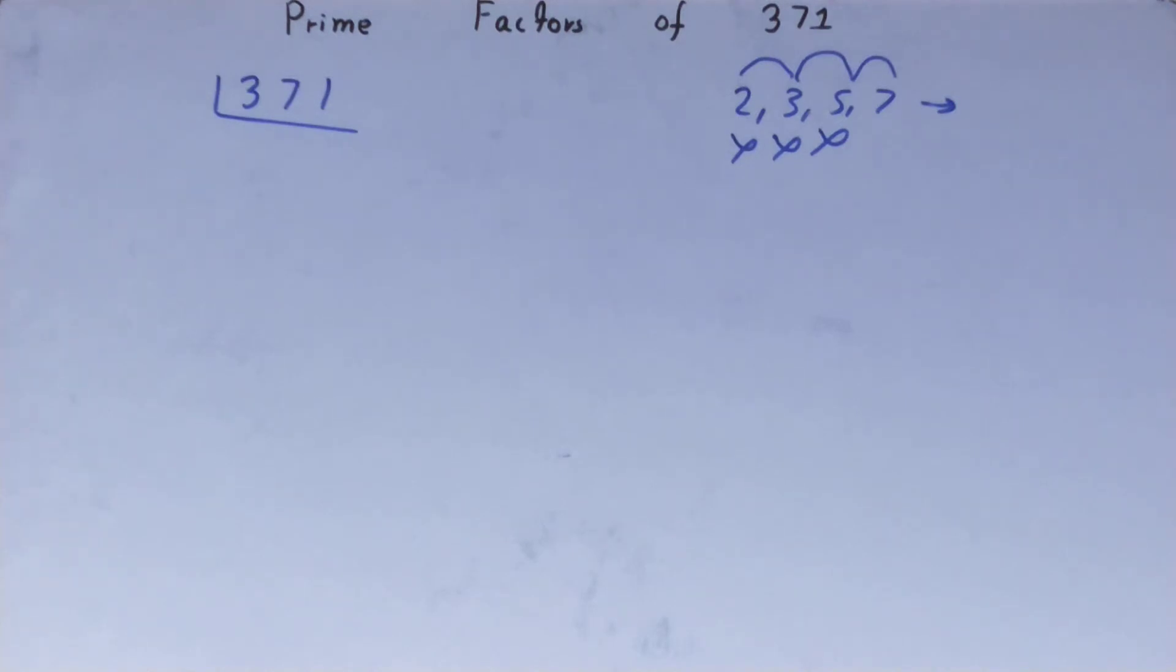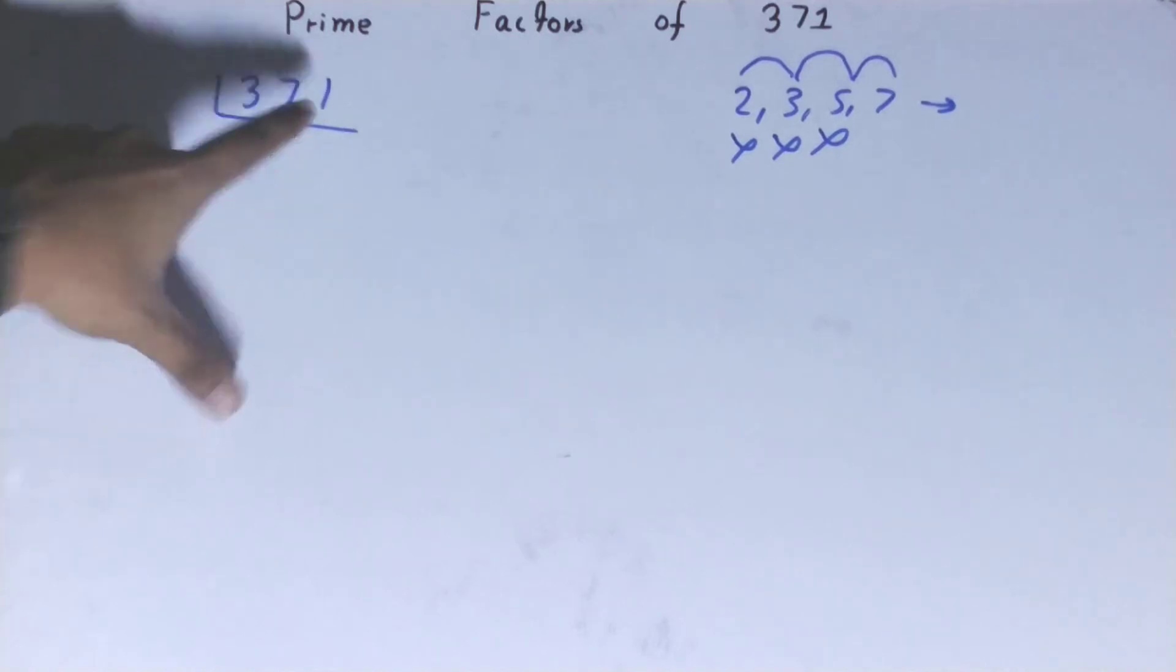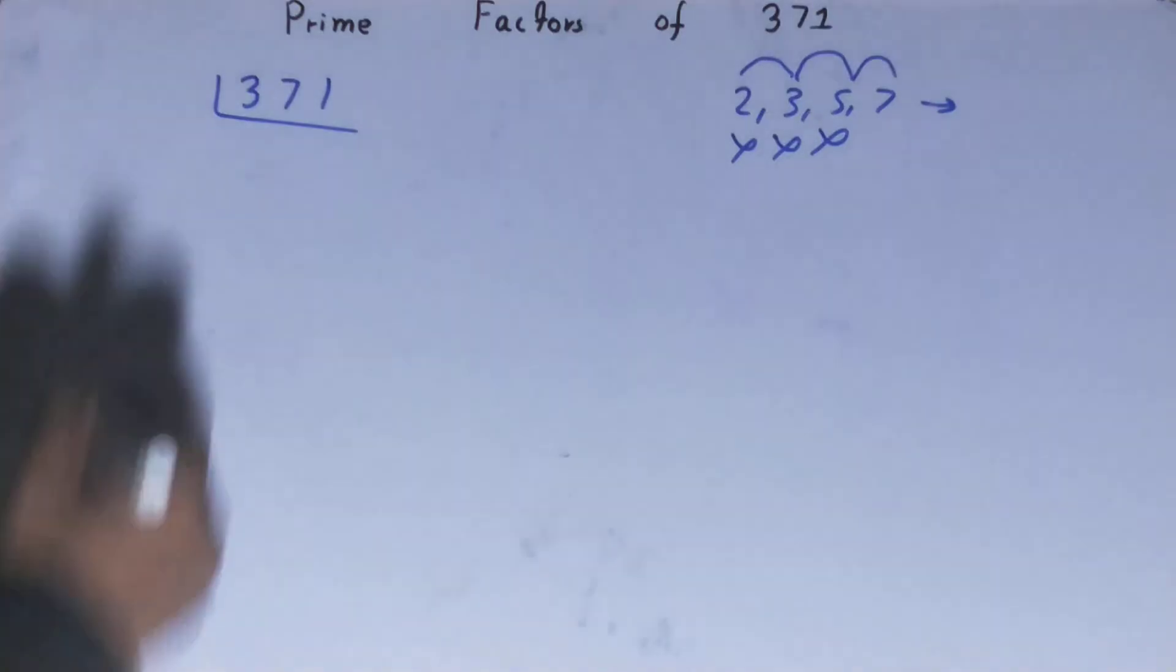That is 7. Is it divisible by 7? Let us check. 7 fives are 35 to 1. Yes, it is divisible, so divided.